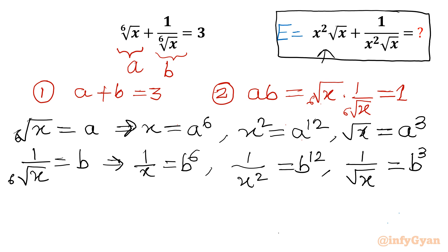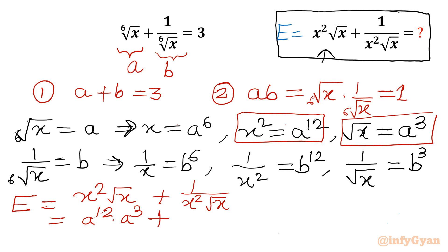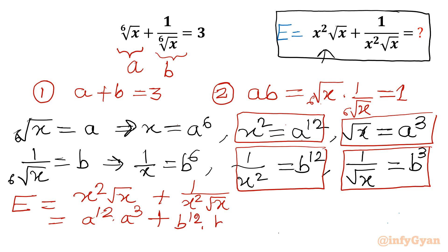So: 1/x² = b¹² and 1/x = b⁶. Now let us consider our expression E = x²·√x + 1/(x²·√x). In place of x² I write a¹², and in place of √x I write a³, so the first term becomes a¹² × a³ = a¹⁵. And 1/x² is b¹², 1/√x is b³, so the second term becomes b¹² × b³ = b¹⁵.